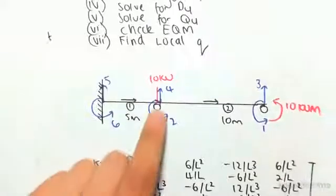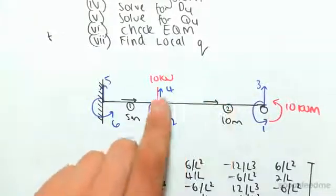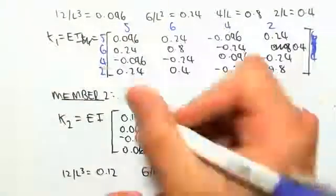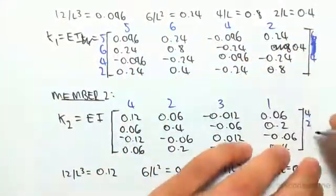Once again, the notation is vertical moment, vertical moment, going in the order of the location vector. So the moment, we have 4, 2, 3, 1, that's all it is, very simple. 4, 2, 3, 1, 4, 2, 3, 1.